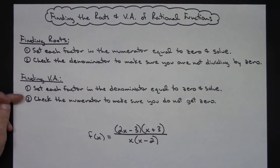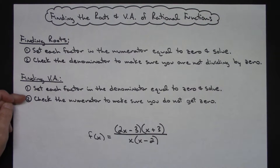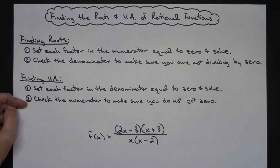To find your vertical asymptotes, you're going to set each factor in the denominator equal to zero and solve, and here again you're going to want to check in the numerator to make sure that you do not get a zero.